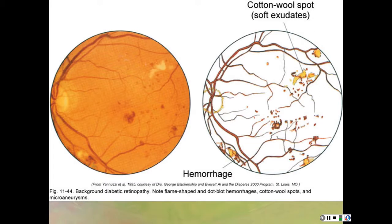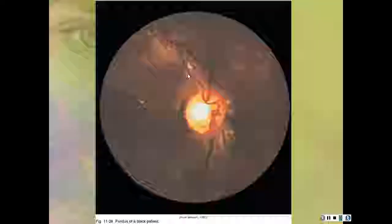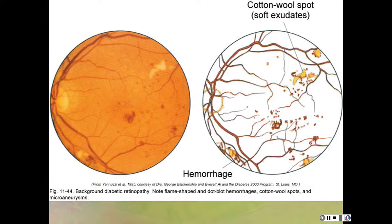Now let's talk about background retinopathy or diabetic retinopathy. What you're looking for are little hemorrhages—soft exudates on the retina. These appear as white or lighter yellow patches. The white spots I mentioned earlier in the black patient's fundus could represent drusen bodies or diabetic retinopathy.